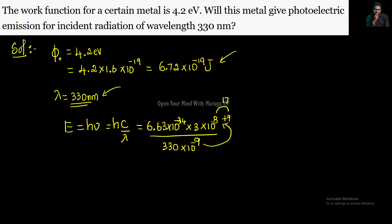This is 17, then the power term becomes minus 17. 6.63 times 3 is 19.89, so we get 19.89 into 10 to the power minus 17 divided by 330. This becomes 10 to the power minus 19 divided by 330.